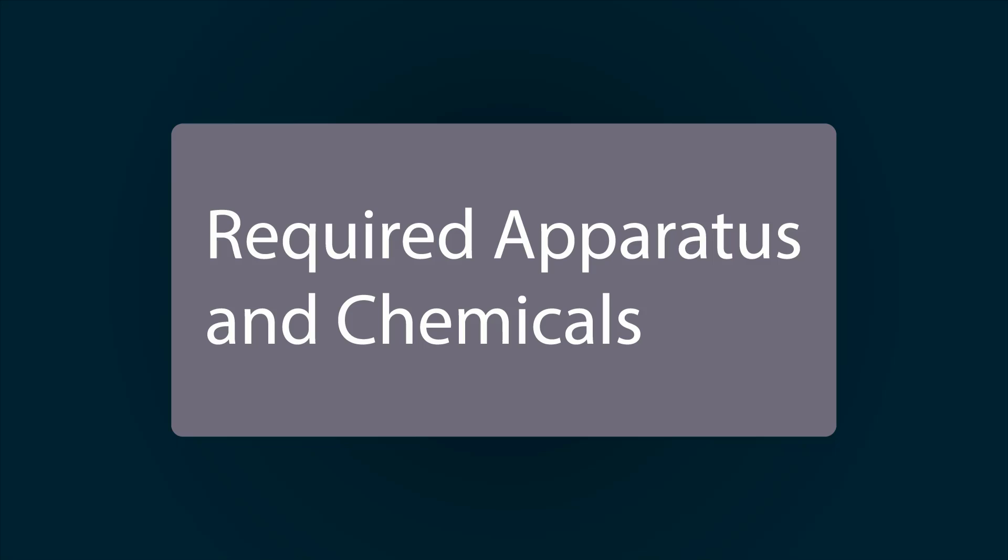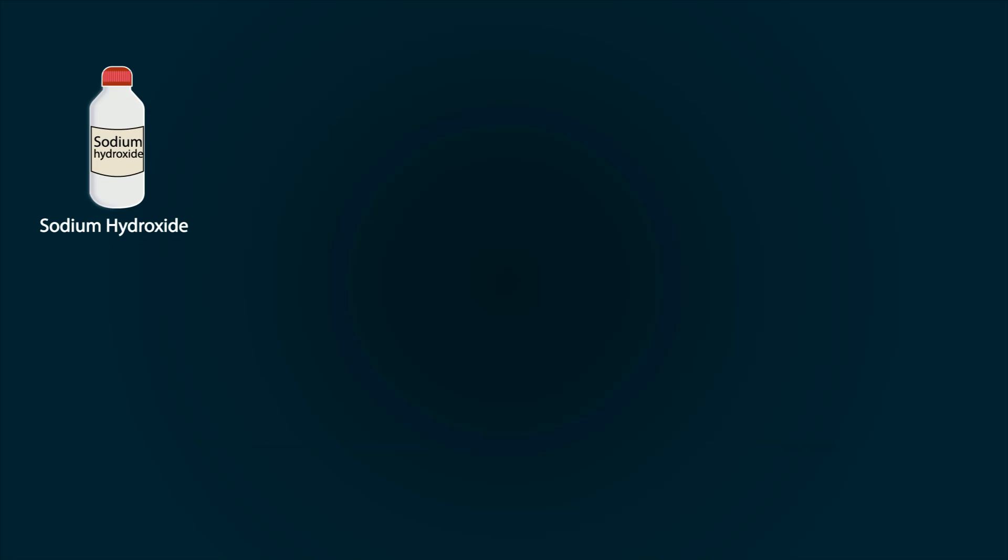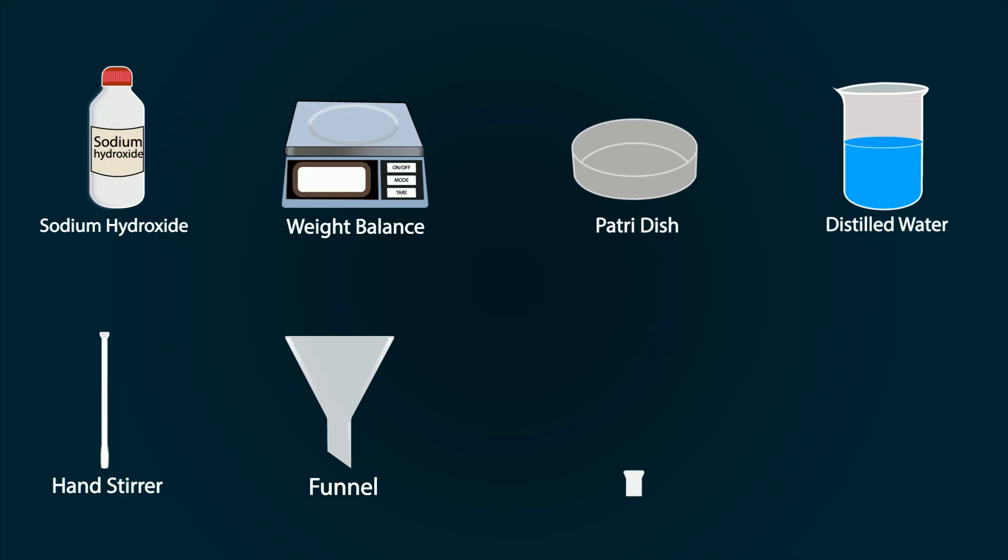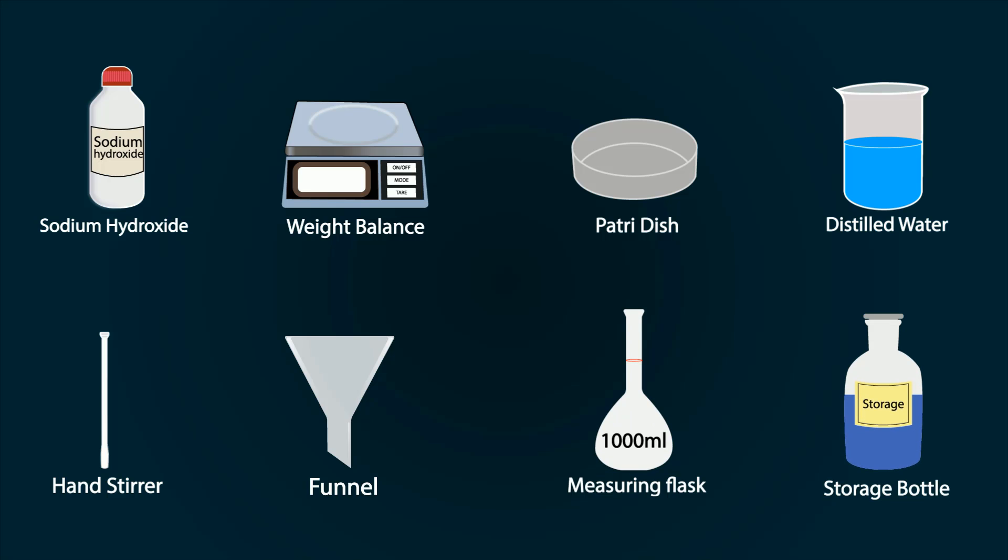Required apparatus and chemicals include sodium hydroxide, weight balance, petri dish, distilled water in a beaker, hand stirrer, a funnel, measuring flask of 1000 ml, and storage bottle.